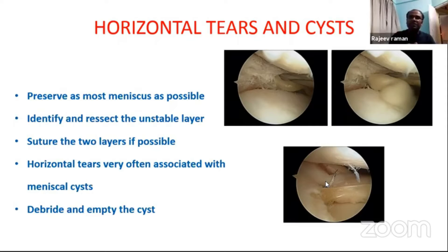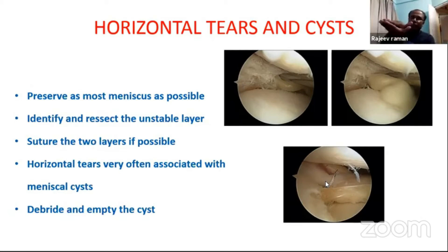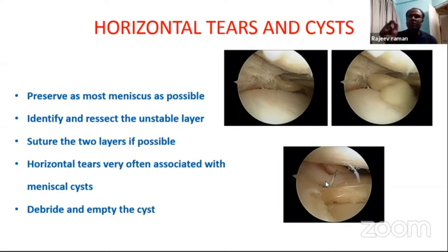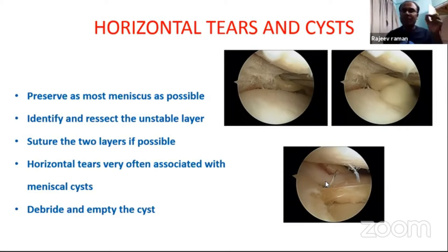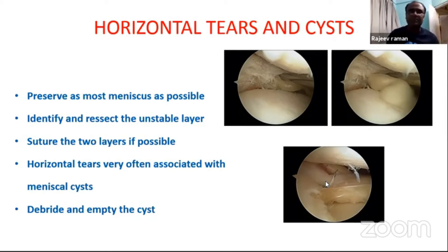So for horizontal tear, the take-home message: go for balancing. Identify the unstable layer, remove the unstable layer. Once you get a lamellar type of tear, suture it with a vertical mattress suture. And debride the meniscus cyst — don't leave the meniscus cyst there. The patient will say they no longer have the locking episode or click, but they will still come with a painful knee if you have not debrided the cyst. So always debride and empty the cyst.